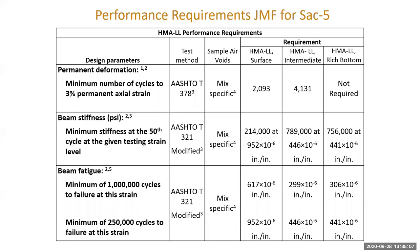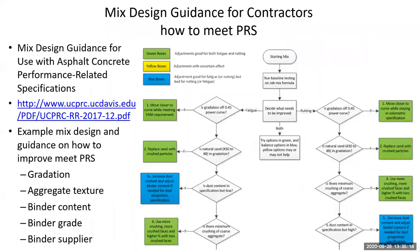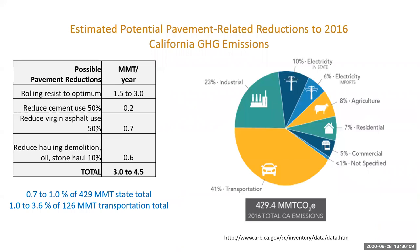You can't hold contractors to performance-related specifications and all volumetric mix design requirements simultaneously, so we waive most of the volumetric requirements. This is an example of the specifications on the current job, Sacramento 5. Most contractors have no idea how to design a mix for fatigue, stiffness, and permanent deformation — they've designed for VMA and N-design and things like that. Many really have no idea how to go about this, and that risk costs money. So we're trying to reduce that risk by producing a mixed design guidance for use with asphalt concrete PRS, which walks them through how to make mix design changes to achieve fatigue and permanent deformation PRS, starting from the cheapest changes and moving to the most expensive.